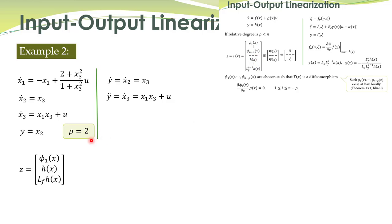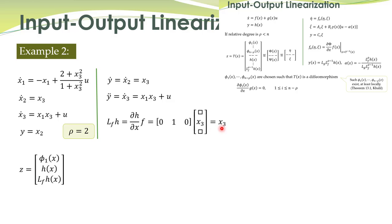We can perform input-output linearization using the state transformation. For rho equal to 2, the transformation includes h(x) and L_f h(x). Here h(x) is x2 and L_f h(x) comes out to be x3. We need to find phi_1(x), selected such that the transformation is a diffeomorphism. Additionally, phi_1(x) must satisfy a specific condition.